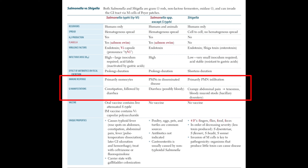Now let us discuss the immune response. For Salmonella typhi, the primary immune response involves monocytes. For non-typhoidal Salmonella species, polymorphonuclear cells are predominant in the blood. In Shigella infection, there is polymorphonuclear infiltration as the primary immune response.